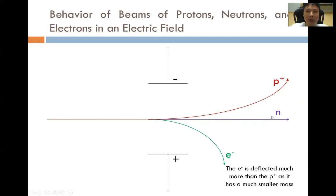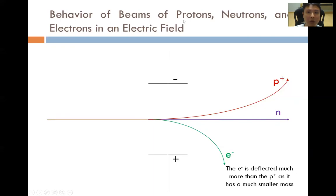Hence, the neutrons just pass straight through in the electric field. Protons are attracted to the positive plate. Electrons are attracted to the positive plate while neutrons pass straight through. That is one difference between the behaviour of beams of protons, neutrons and electrons in an electric field.